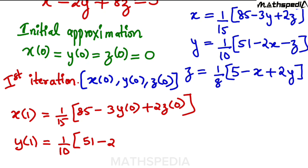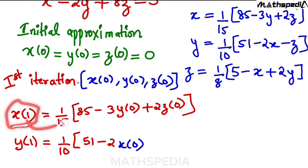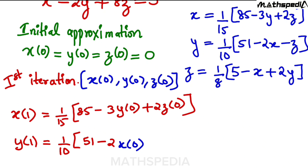In Gauss-Seidel method, what used to happen is that we would substitute the previously calculated value — for instance, after calculating X₁ in the first step, we would substitute X₁ in the Y equation. That is the key difference between these two methods. In Jacobi's method, it is fixed: you put X₀, Y₀, Z₀ throughout the entire first iteration.